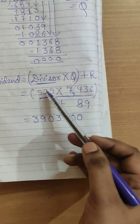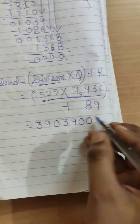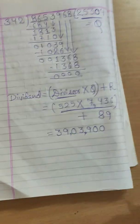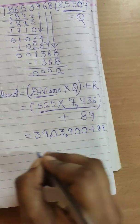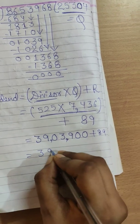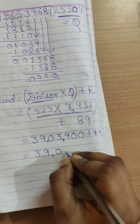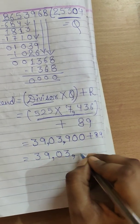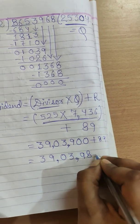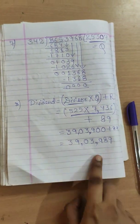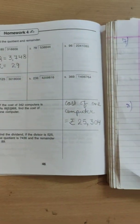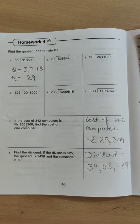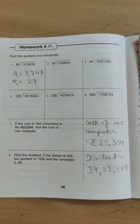So when I multiplied it I have got this answer. So now I will add it with 89 with the remainder. So our final answer is 39,03,989. So write the given this dividend final answer in our blank. Like this you need to write your answer.